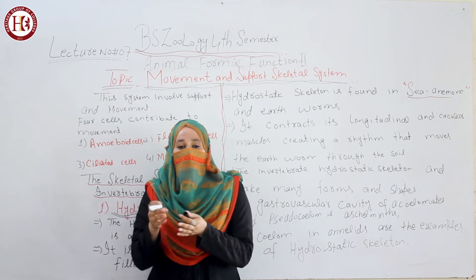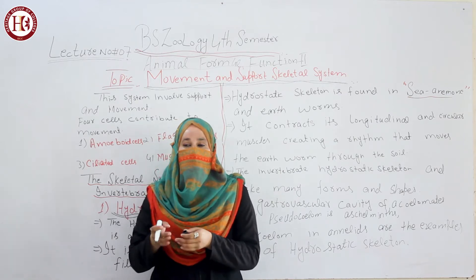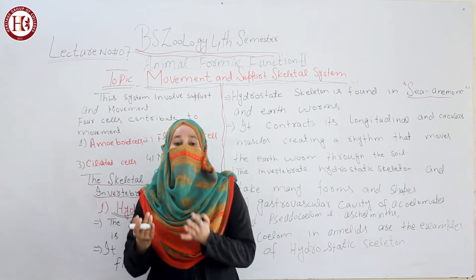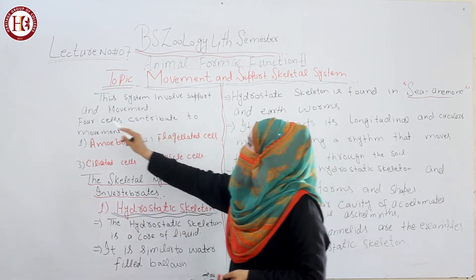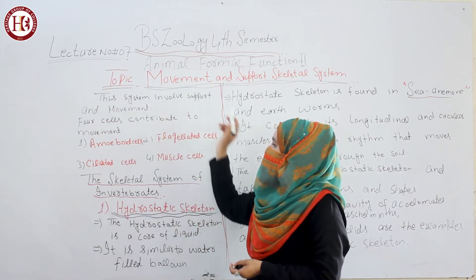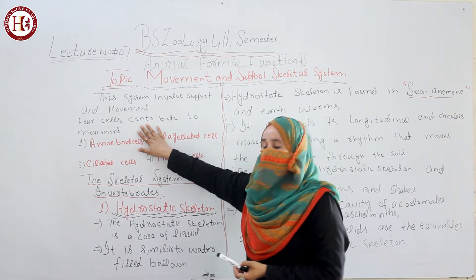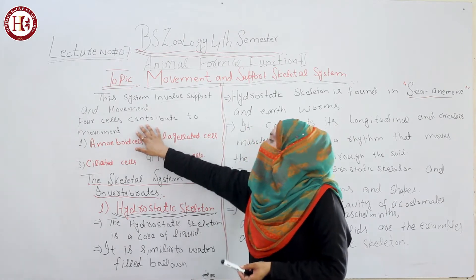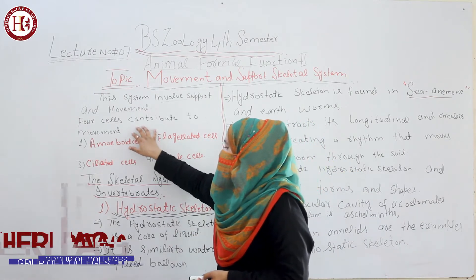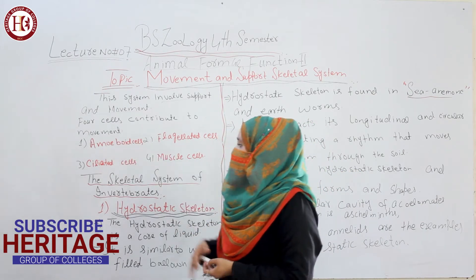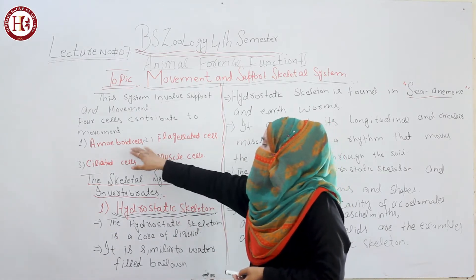Today we discuss how support and movement is done, what is the skeletal system, and what is the skeletal system of vertebrates and invertebrates. This system involves support and movement. There is a very important short question: how many cells contribute to the mechanism of movement? There are 4 cells involved.